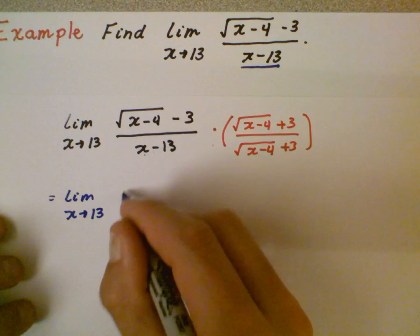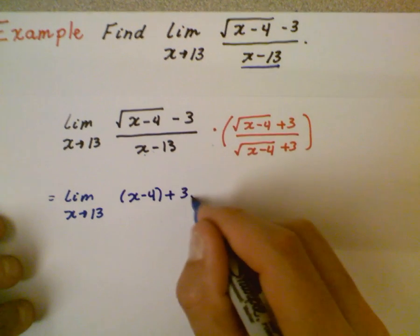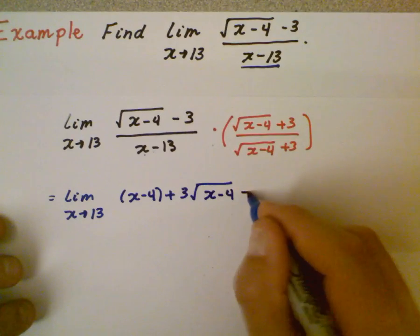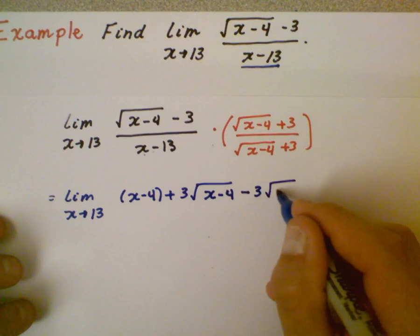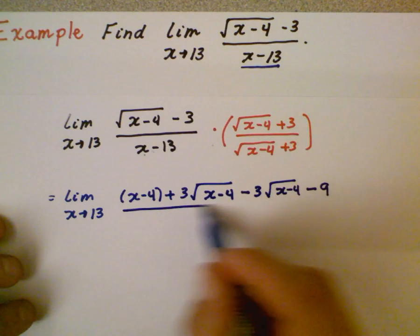So we're going to actually get x minus 4 plus 3 times the square root of x minus 4 minus 3 times the square root of x minus 4 minus 9. That's the numerator.